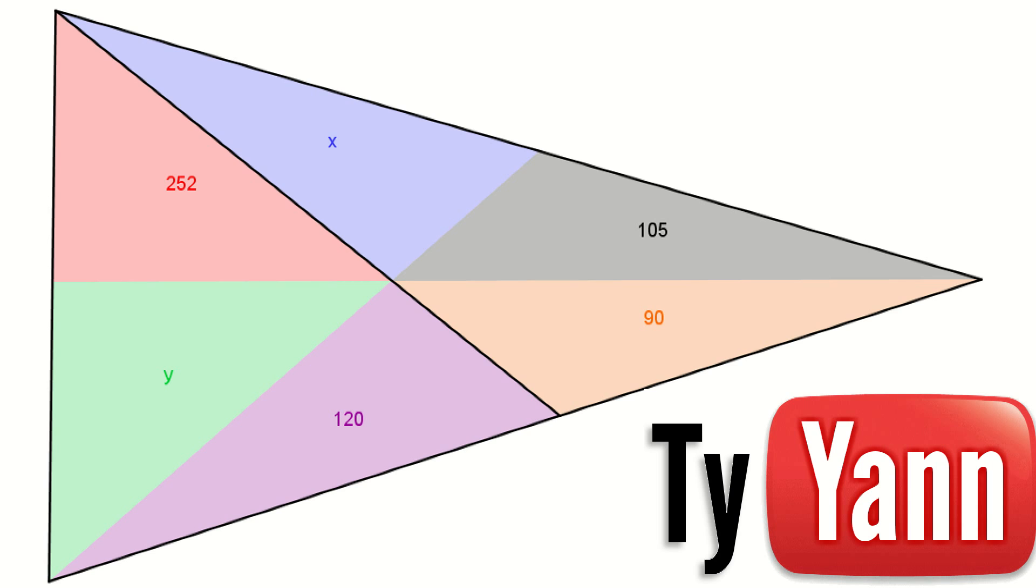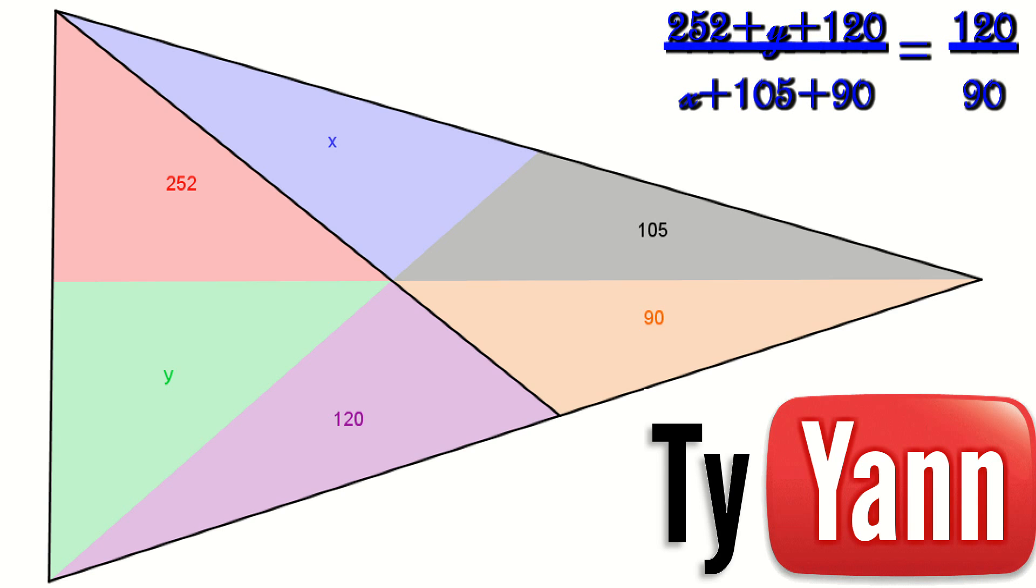Which is of course the same basis as the two big triangles. So we can equal this and get a very interesting equation, which is 252 plus y plus 120 divided by x plus 105 plus 90 equals 120 divided by 90. And this is the first part of our equation.